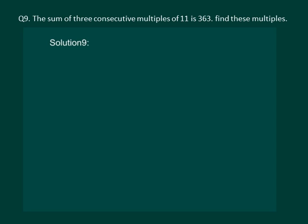Let us read the question. The sum of 3 consecutive multiples of 11 is 363. Find these multiples.